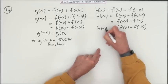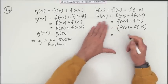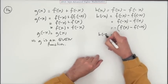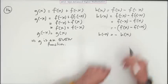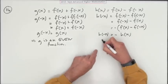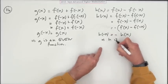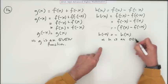So H of negative X, I should have put it down in this line. So H of negative X turns out to be the negative of H of X. Well, that means that H is an odd function.